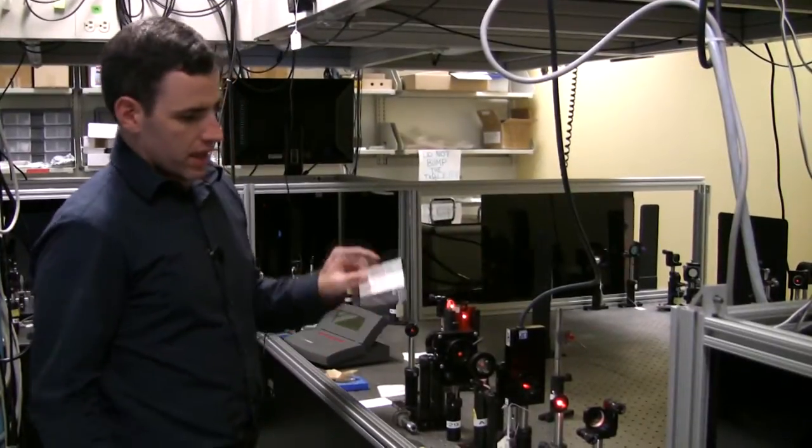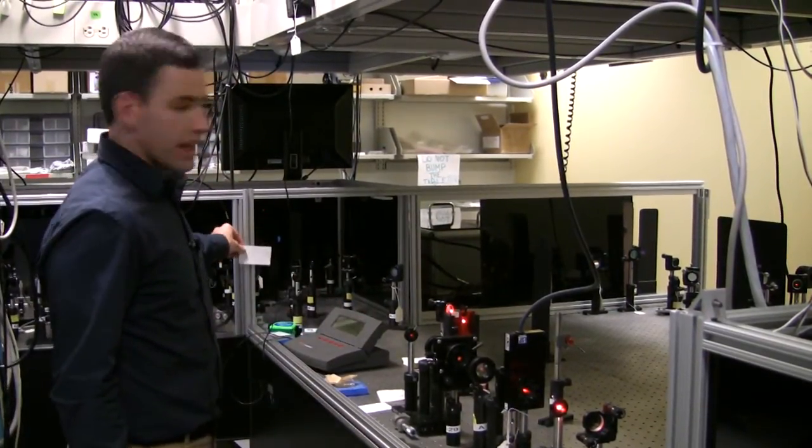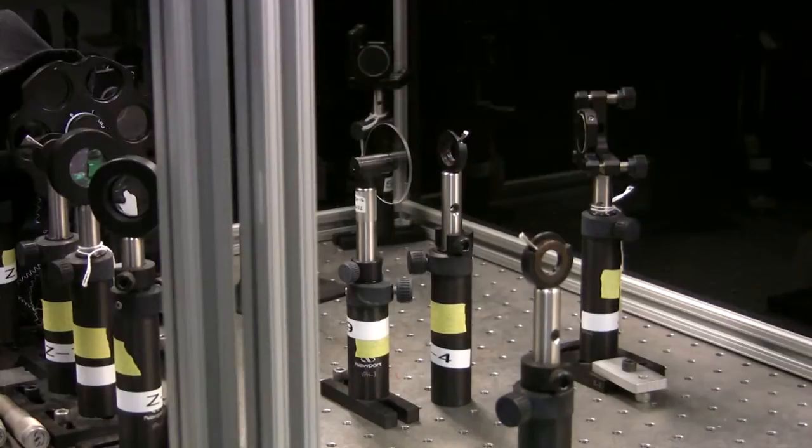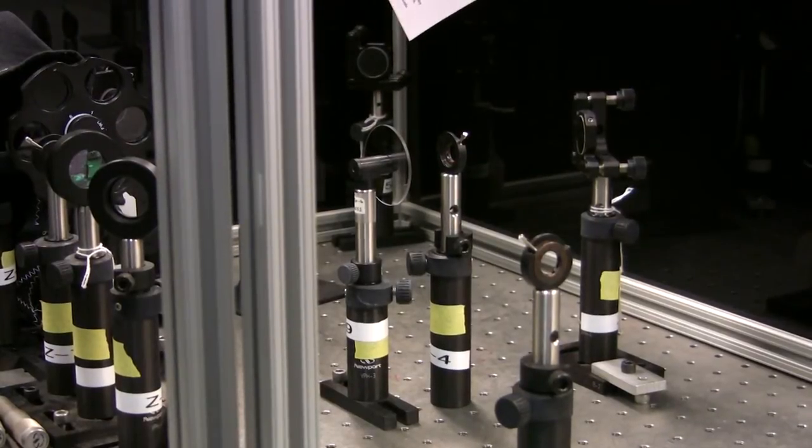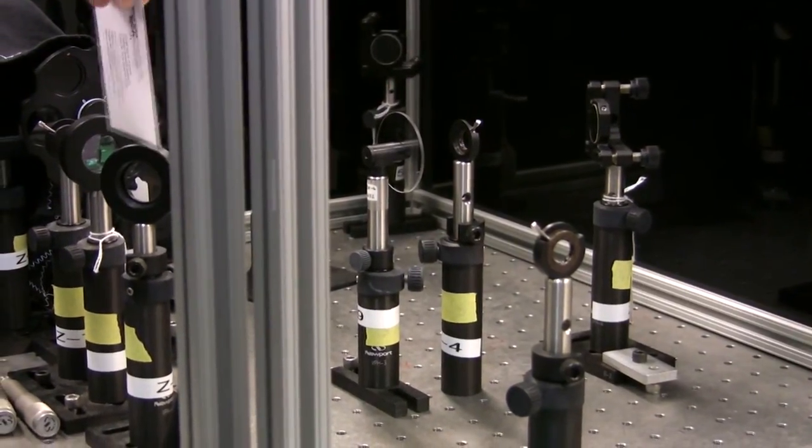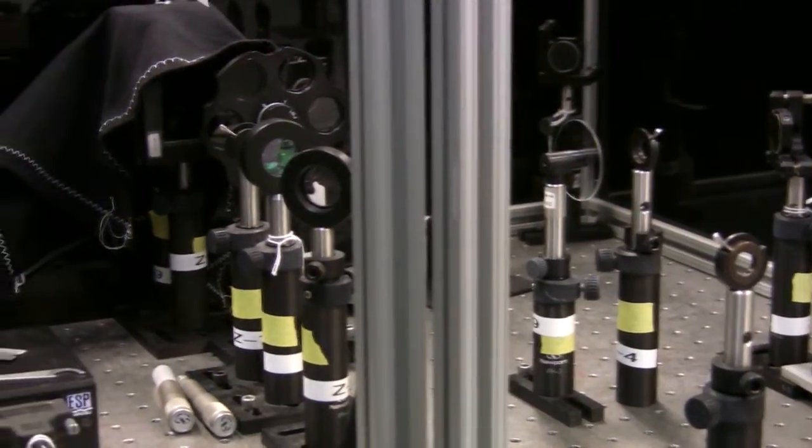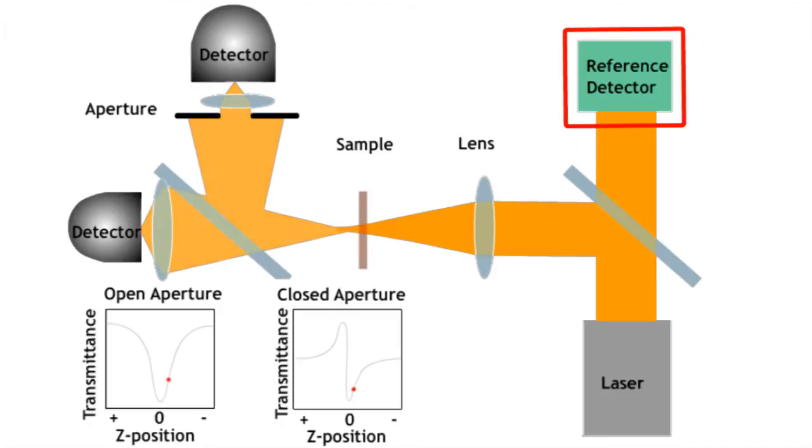So after we go through the spatial filter, we collimate the beam and we travel down the table and we actually enter into the z-scan apparatus. So after the beam bounces off a couple of mirrors, we actually come into the z-scan technique here. And a portion of the beam is actually sampled by a reference detector. And that's going to allow us to account for fluctuations in the energy from pulse to pulse. It's going to allow us to quiet down the actual signals that we get by taking the ratio of that detector to the detectors we're going to look at in a few seconds.